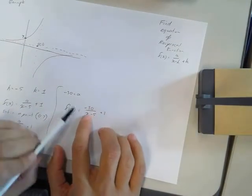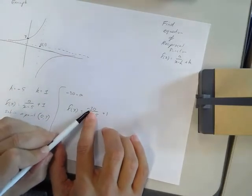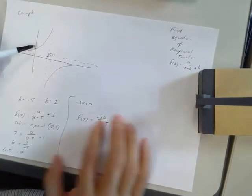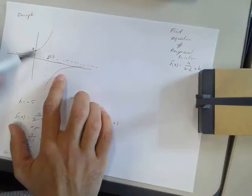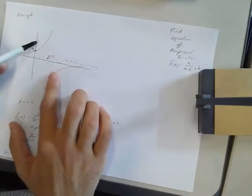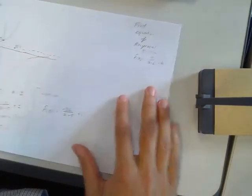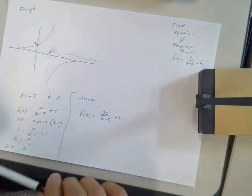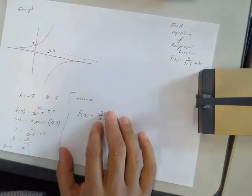One last thing that you really want to note here is that the A value is negative. And if we look at our function, that's not surprising because the sketch is in the second and the fourth quadrant. All right, that's finding the equation of a reciprocal function if you're given the sketch.